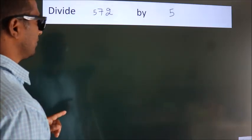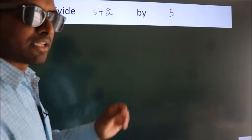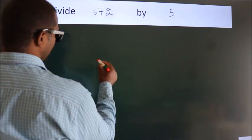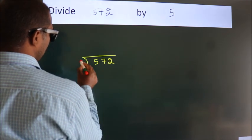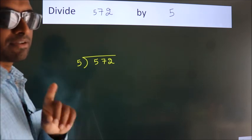Divide 572 by 5. To do this division, we should frame it in this way. 572 here, 5 here. This is your step 1.